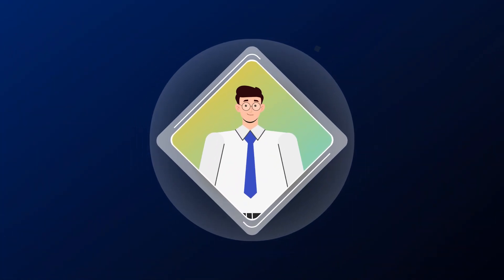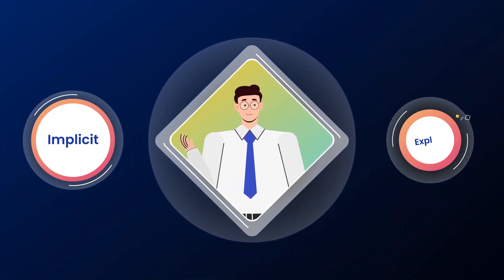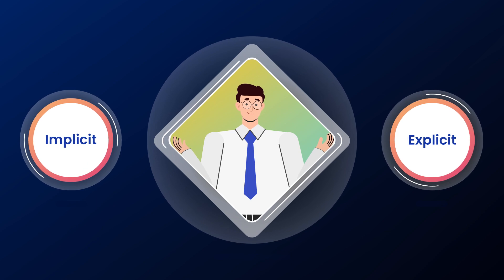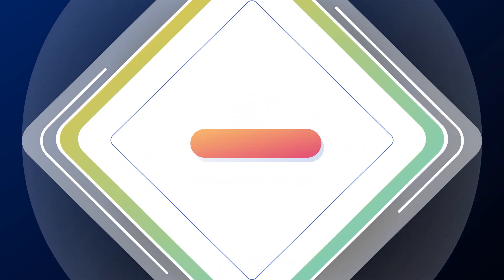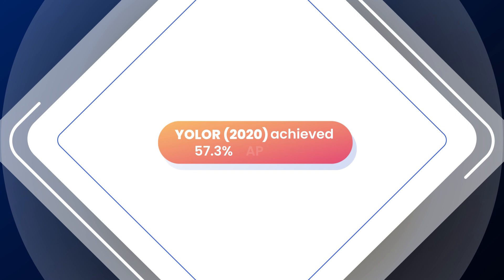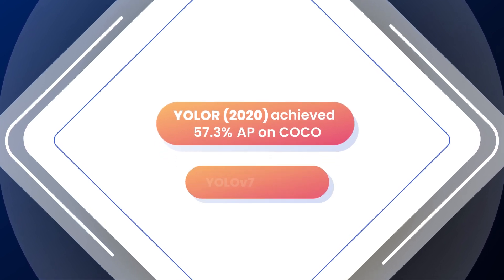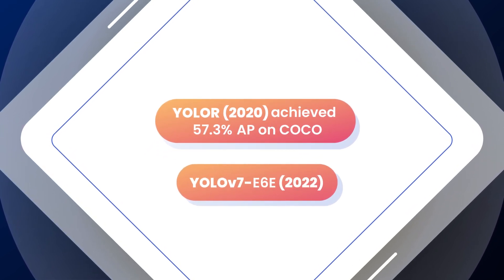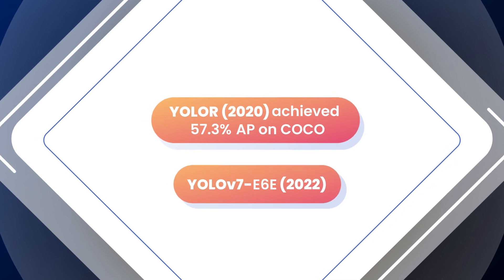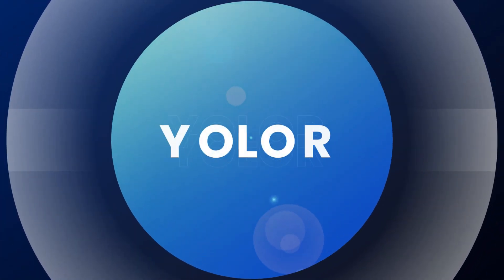Taking inspiration from how humans combine implicit with explicit knowledge to tackle unseen tasks, the YOLO-R Unified Networks achieved 57.3% AP on the COCO test set, which is better than the recent YOLO-V7 E6E model. Hey there, welcome to Learn OpenCV. In this video, we will learn about YOLO-R.